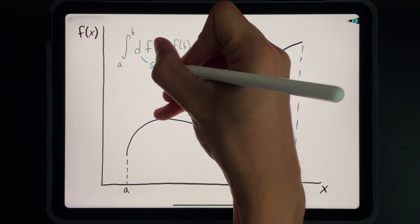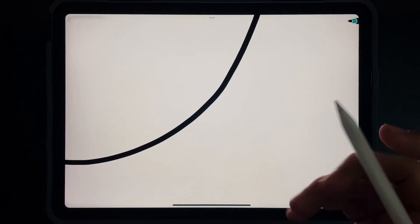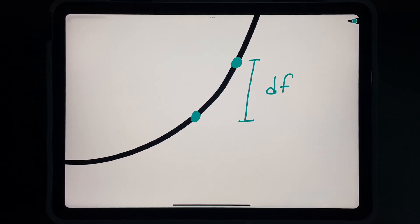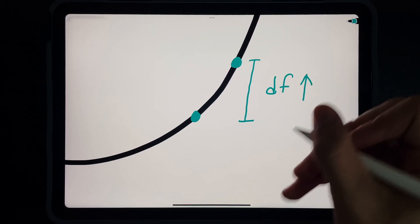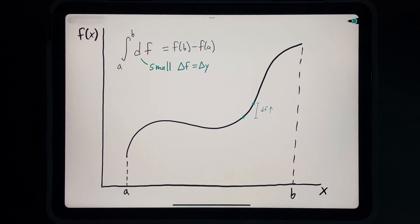Remember that df is a very small change in the value of the function f. Infinitesimally small, in fact. Graphically, this would correspond to a vertical movement from one value of f to another. So we understand what df is. Now let's check out the rest of this truncated formula.